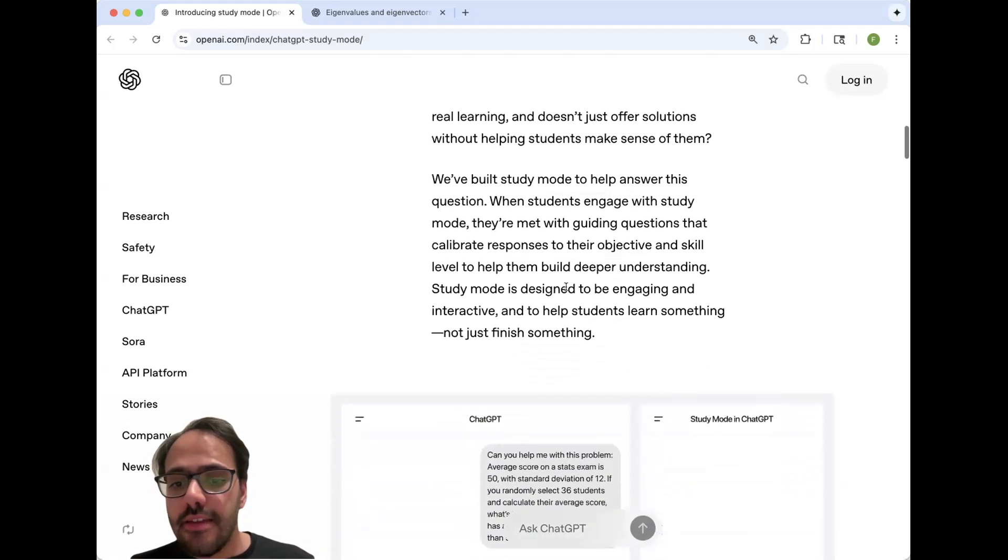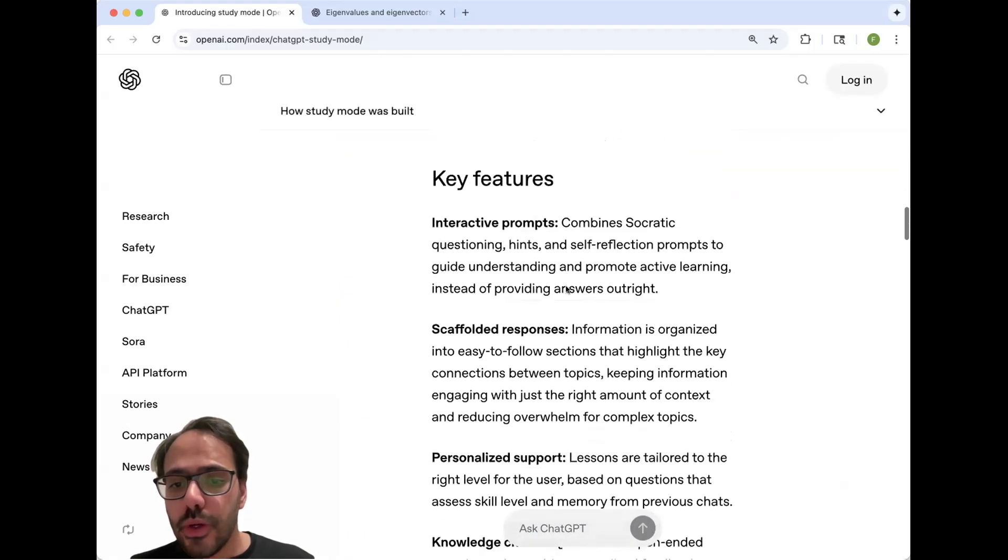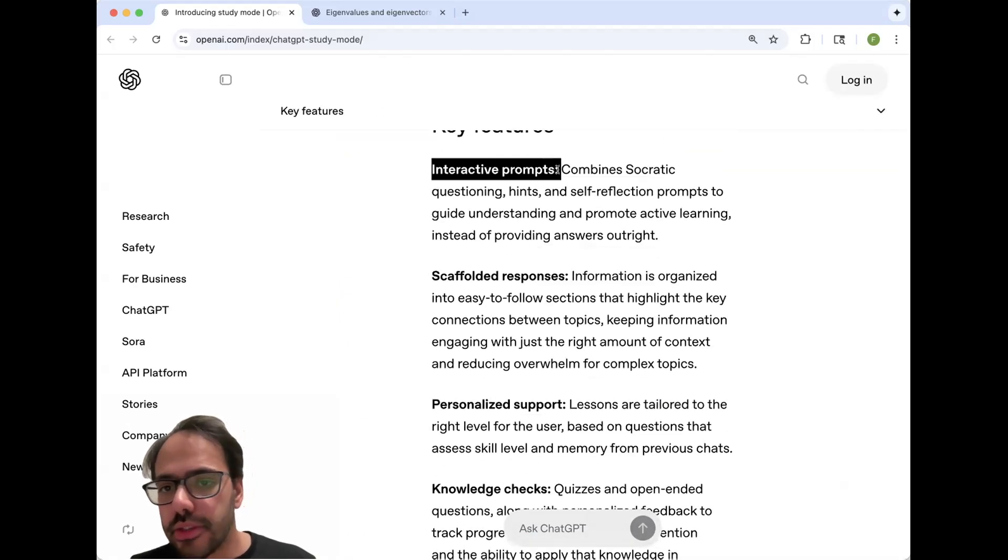So what are the key features of study mode? The first one is interactive prompts, meaning that it combines questionings, hints, self-reflection prompts to make sure that you understand the topic and also promote active learning. This is very important because it's opposite of passive learning where you're just given some information and you have to digest this on your own. Instead, active learning promotes engagement from your side and you can interact with ChatGPT to make sure that you understand intermediate steps.